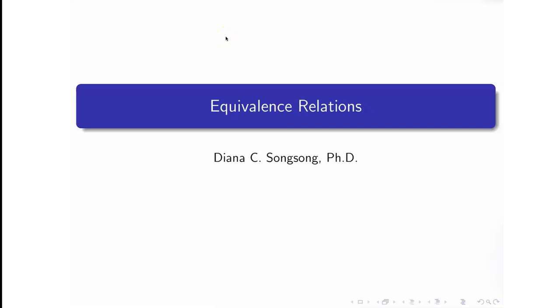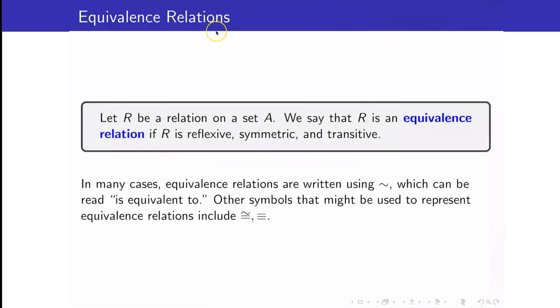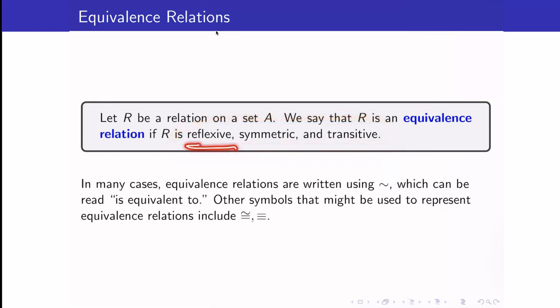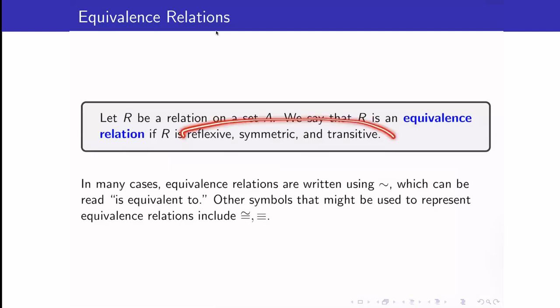In this lecture, we are going to discuss equivalence relations. In our previous lecture, we talked about relations and the four properties: reflexive, symmetric, transitive, and anti-symmetric. Now, in the case that R satisfies the first three — reflexive, symmetric, and transitive — we say that it is an equivalence relation. We also say this as the RST property, so that it will be easier to memorize the three properties that must be satisfied by an equivalence relation.